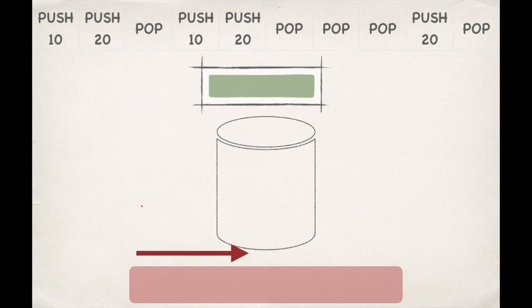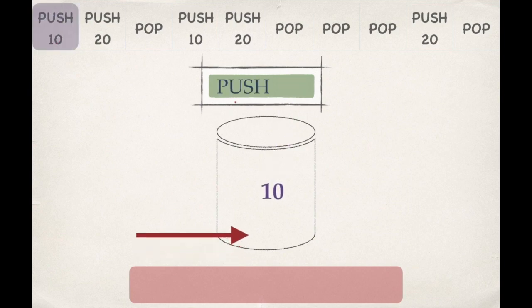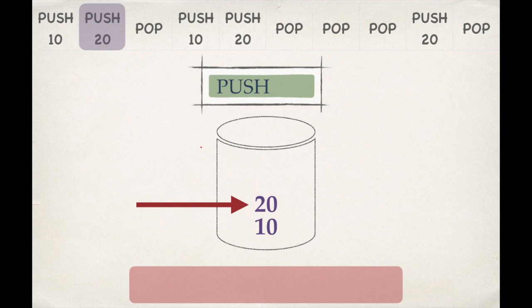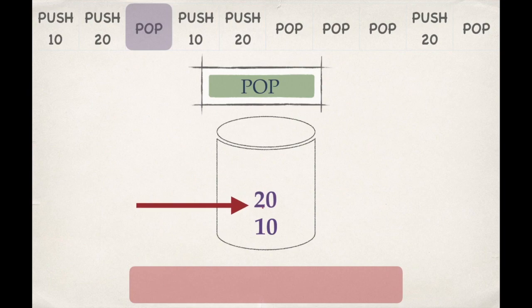Let's start with PUSH 10. We insert 10 into the stack, update the pointer, and move to the next operation. PUSH 20: we insert 20 and update the pointer. POP: we delete the topmost element from the stack. Similarly, we will perform all these operations.